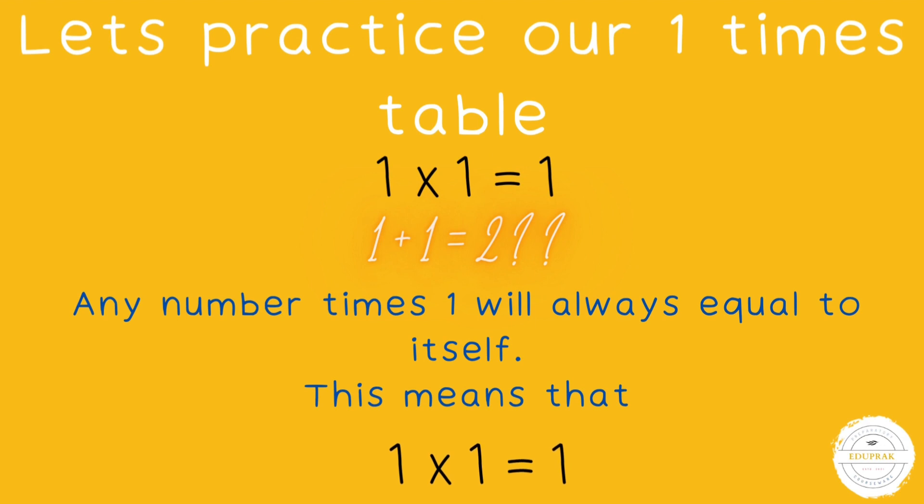Now let's practice our one times table. One times one equals one. What does this mean? Any number times one will always equal itself. That is why one times one equals one.